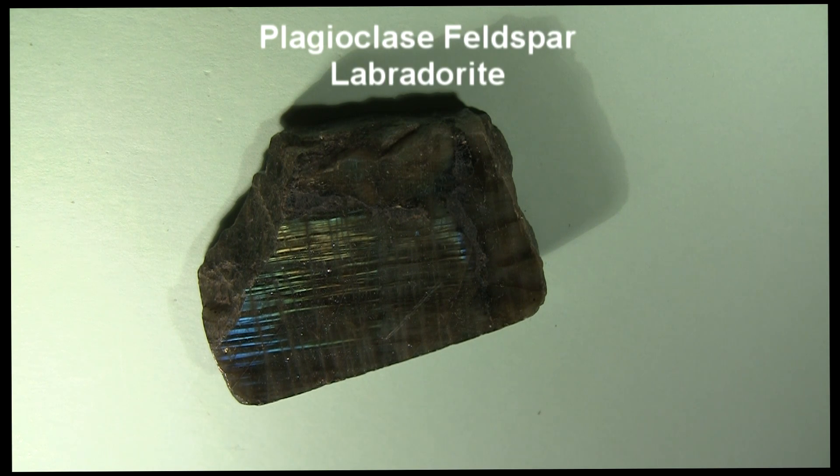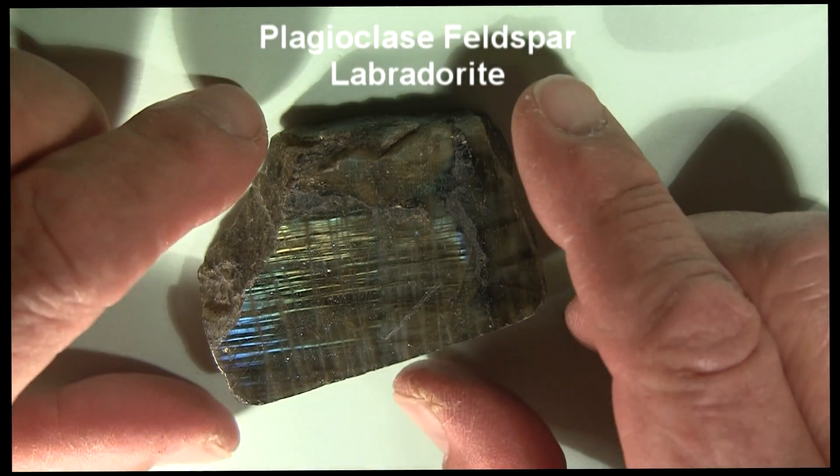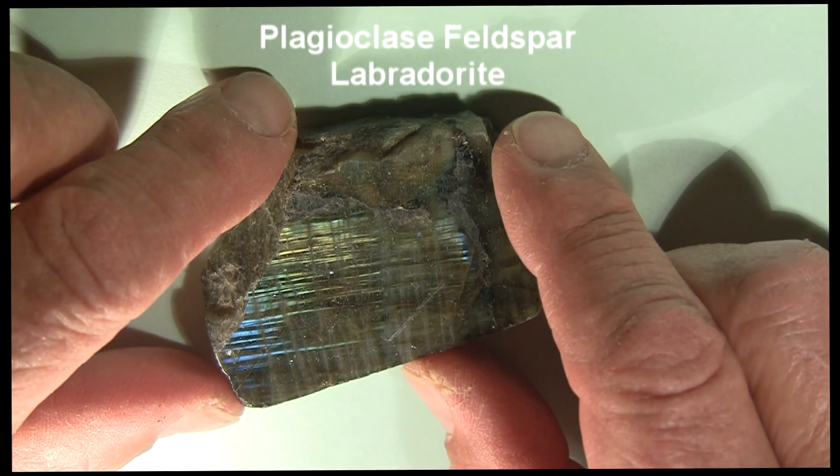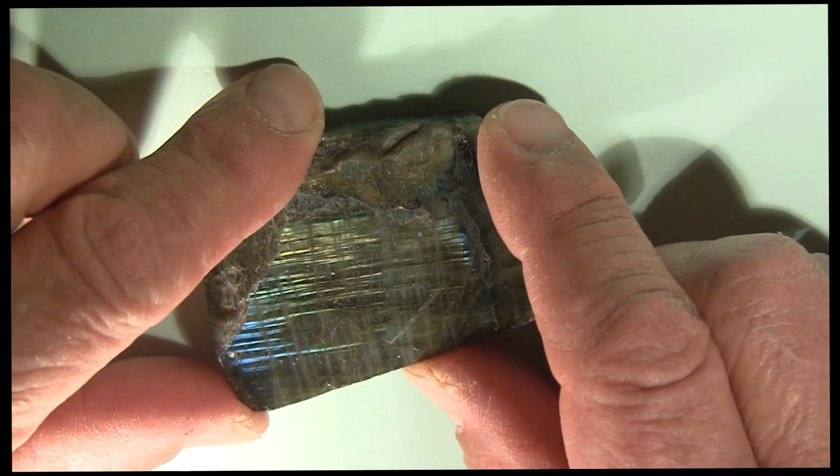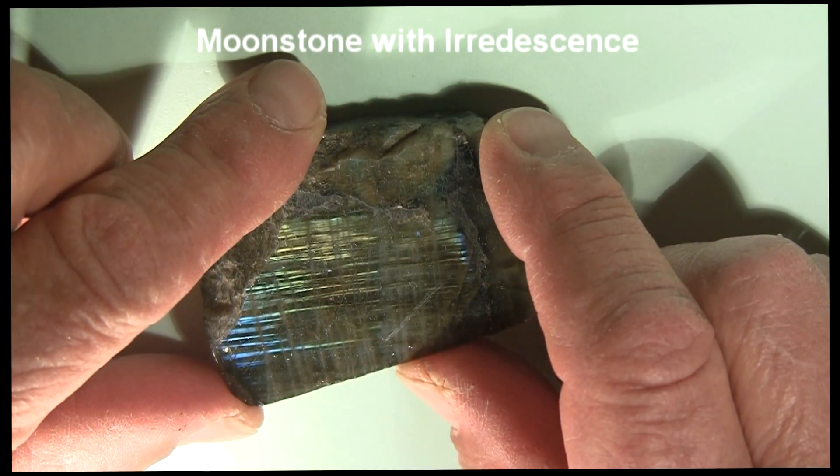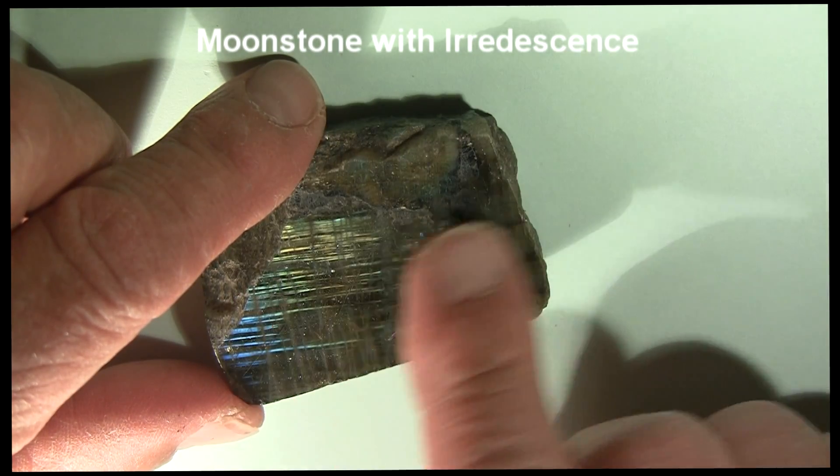This is a piece of feldspar, plagioclase feldspar, called labradorite. In particular, this one is a semi-precious gemstone called moonstone because of the interesting iridescence or play of colors that it has in there. This is a polished surface.